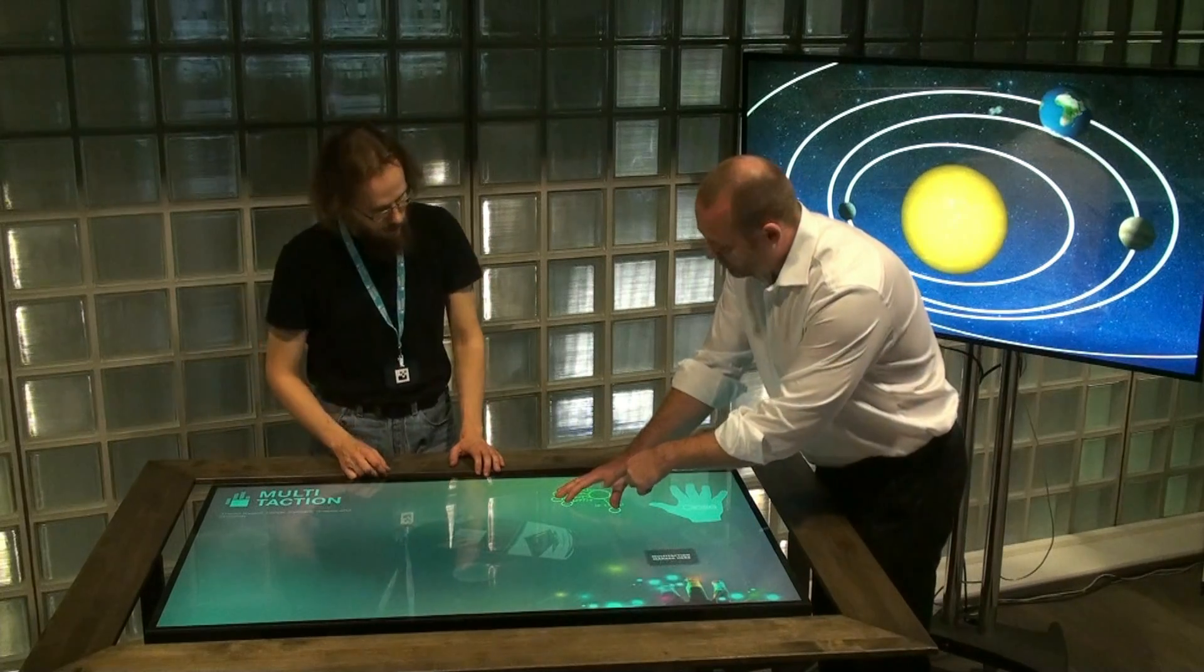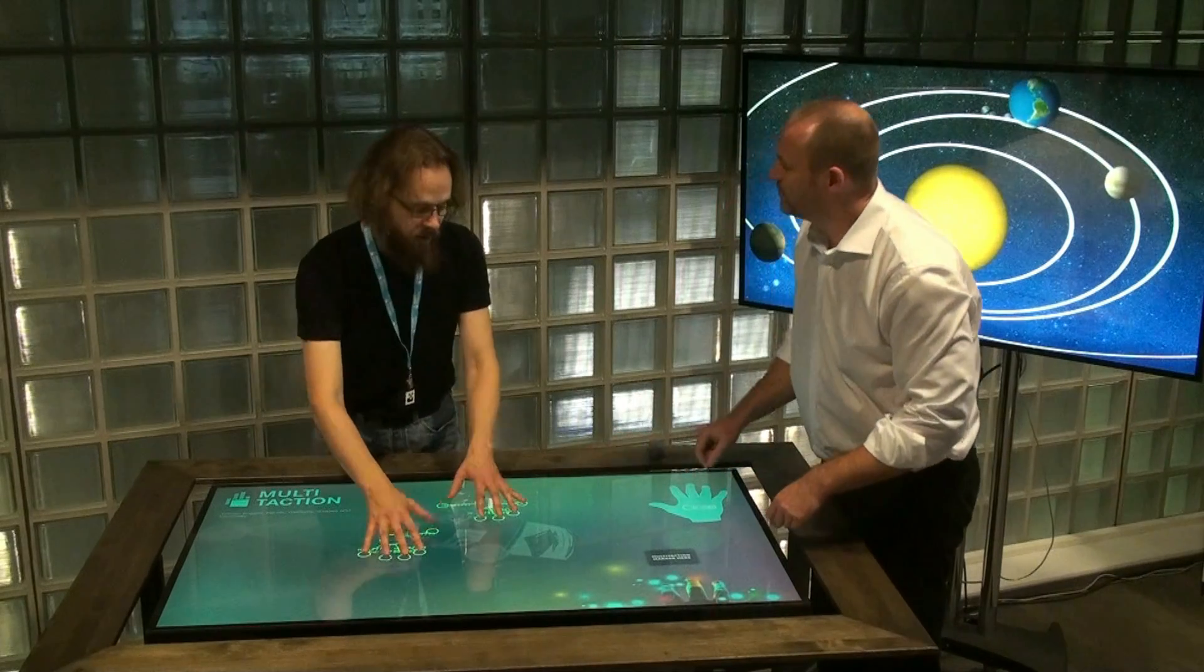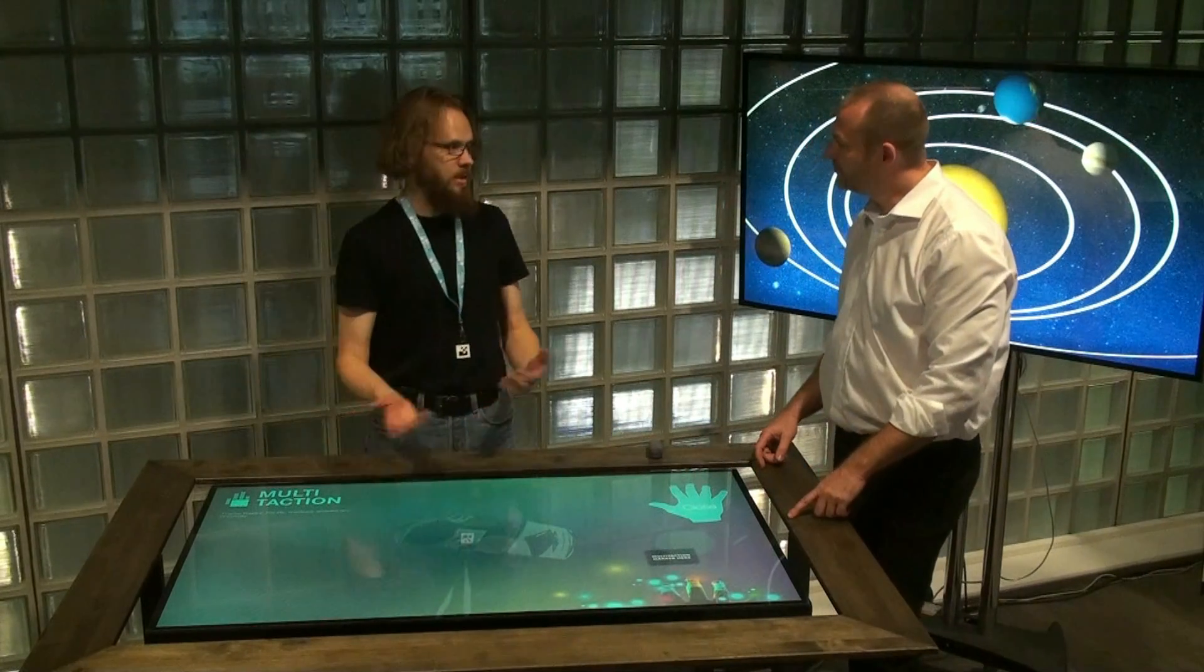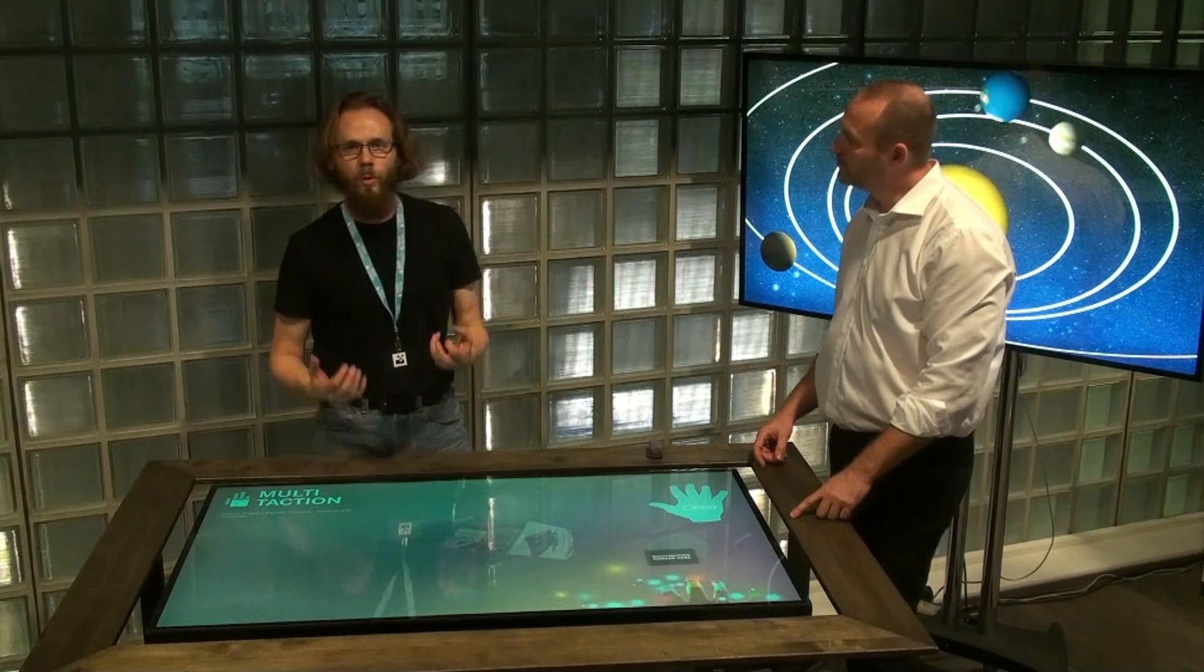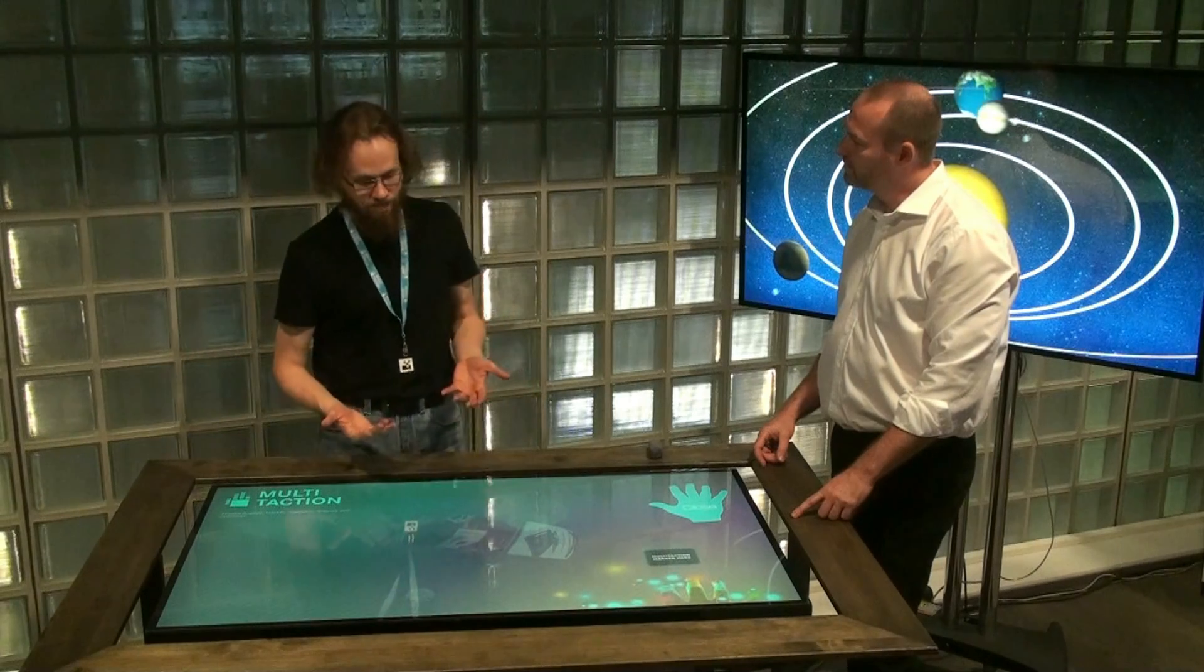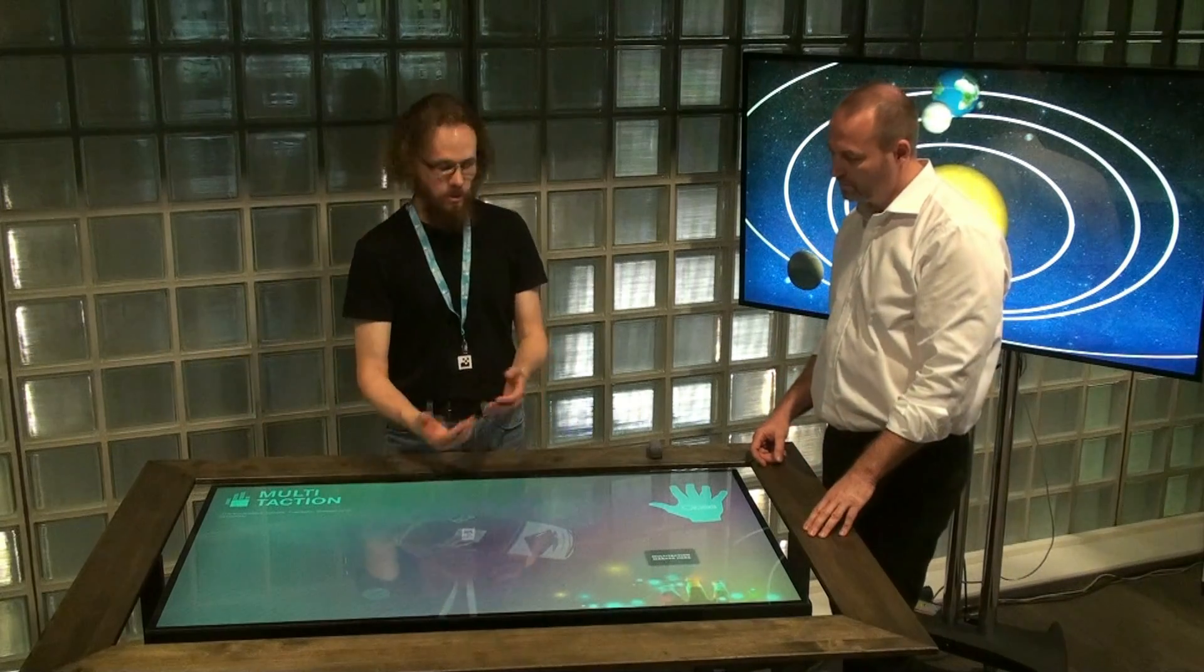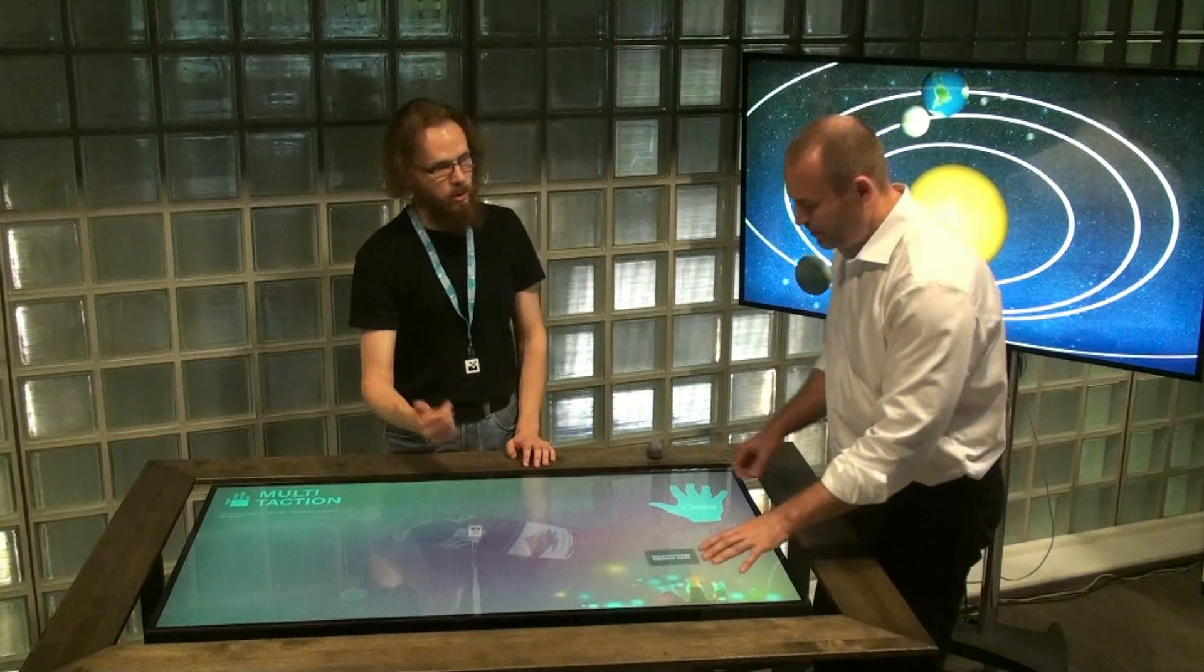But this is pretty unusual, right? We can actually see the palm also, not just the fingertips. Yes, it gives us extra information which can be very useful when you're building a user experience. For example, you can tell when people put their hand on the screen where the people actually are because the palm direction is a good indication of that.